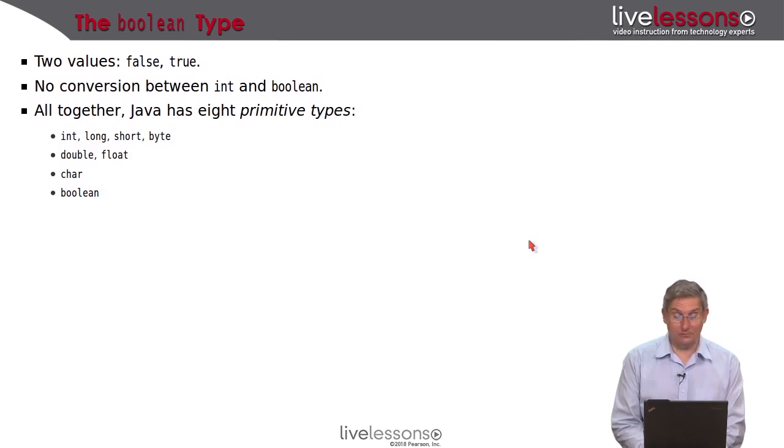Altogether, Java has eight primitive types that you see here: int, long, short, byte for integers; double, float for floating point numbers; char for characters; and the boolean type. And these primitive types are a little bit special, as you'll see later, because everything else in Java is an object.